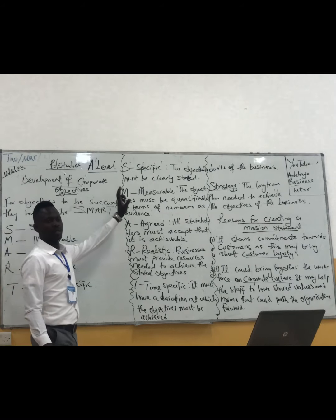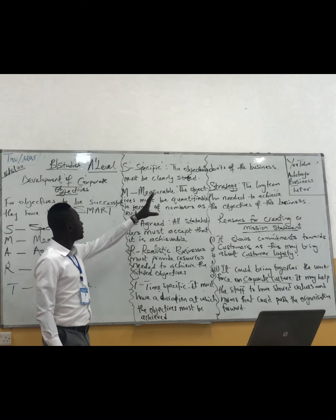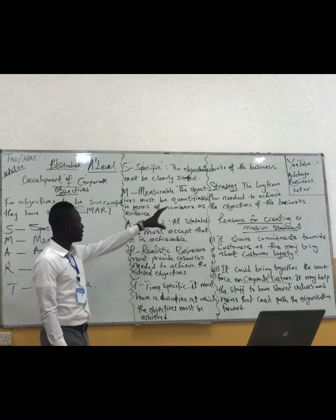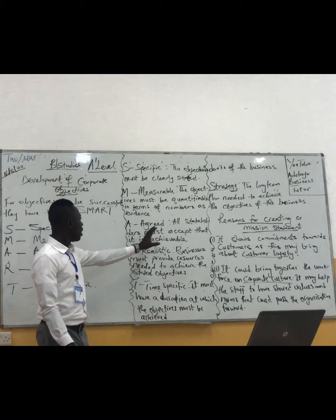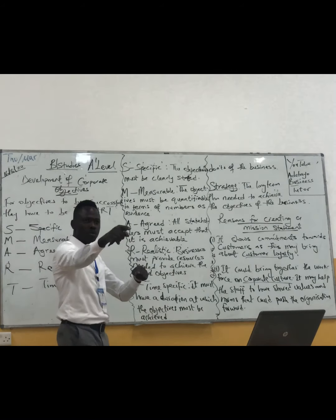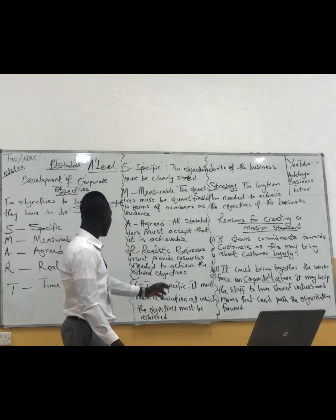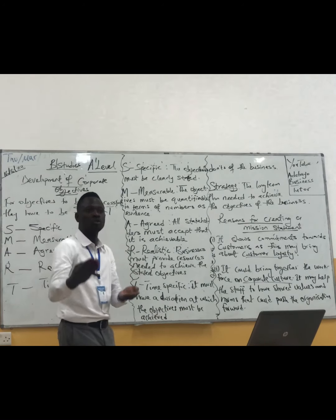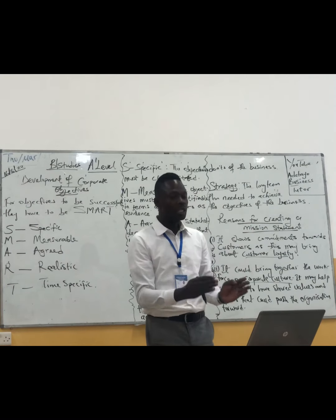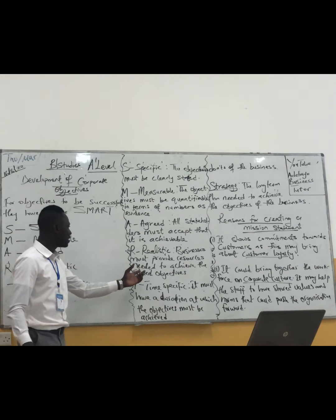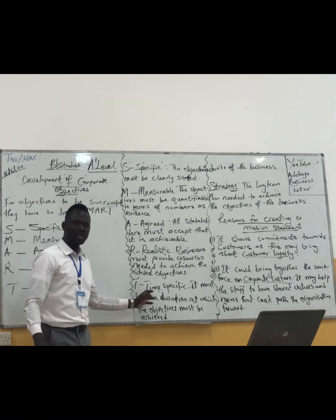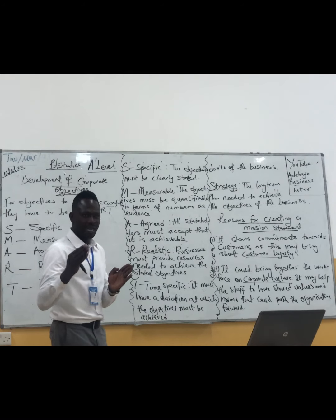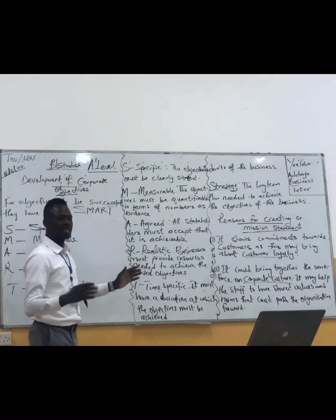To recap: Specific — the objective must clearly state what has to be done. Measurable — the objective must be quantified in terms of numbers as evidence. Agreeable — all stakeholders must accept it is achievable; it's not only you, everyone must agree that it can be achieved. Realistic — you must provide the resources needed to achieve the distinct objectives. Time-specific — you have to specify when it starts and when it must be completed, for example from 7 o'clock to 3 o'clock, finishing the topic within the next hour.